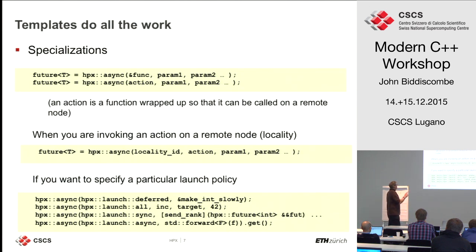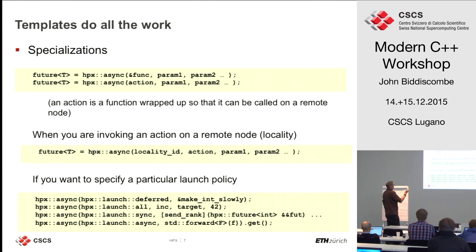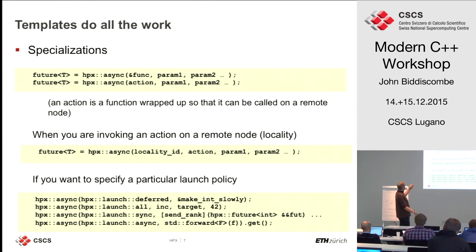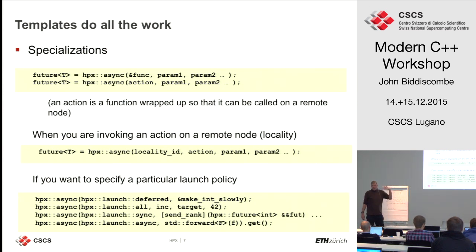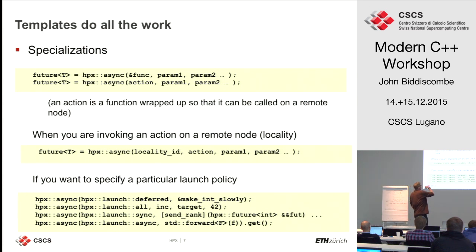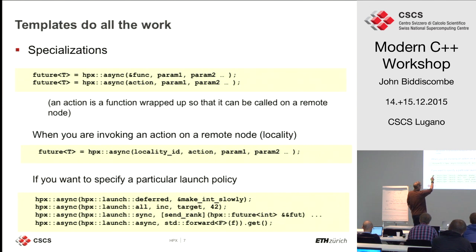When you spawn a task using async, there are a number of different specializations in the HPX library which effectively do different things. You can spawn one and say: execute this function with these parameters and give me a future back. The future is templated on whether it's an int, void, or some structure you're returning. You can also spawn them remotely with an action type where an action type is something on another node.